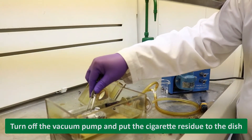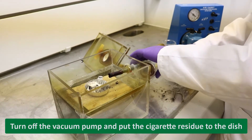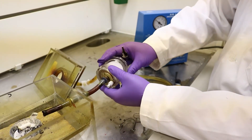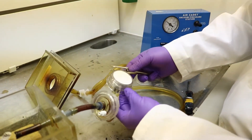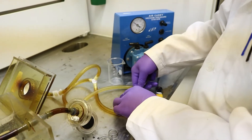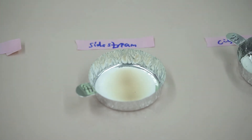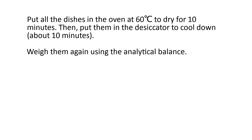Now take the cigarette residue from the tubing and put it in the collecting dish — this is the dish with ash that fell while the cigarette burned. Open the inhale line filter holder and transfer the paper into the original inhaled dish. Open the side stream line filter holder and transfer the paper into the side stream dish. Put all the dishes in the oven at 60 degrees Celsius to dry for 10 minutes, then take them out and put them in the desiccator to cool down. Weigh them again using the analytical balance — make sure to use the same balance.